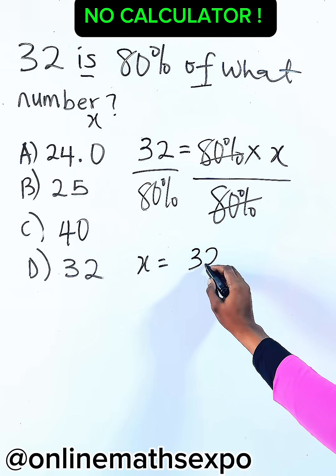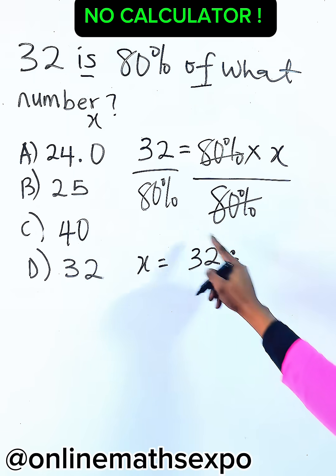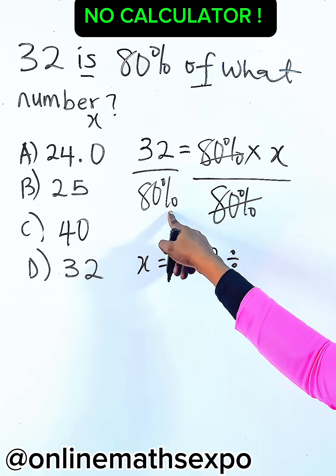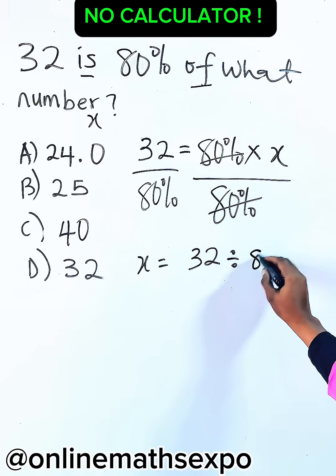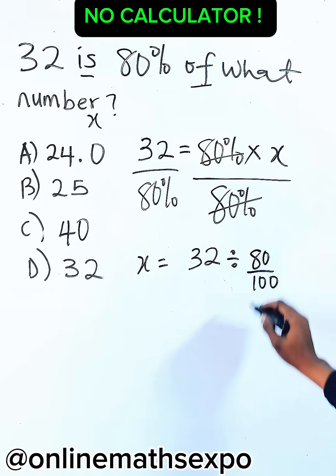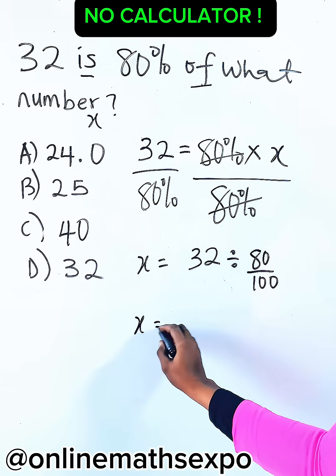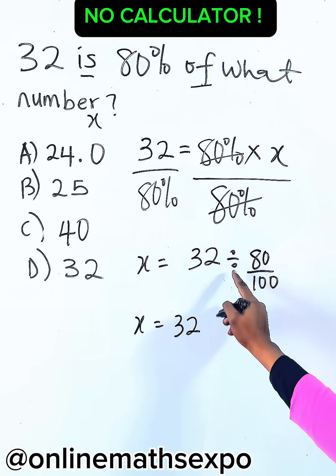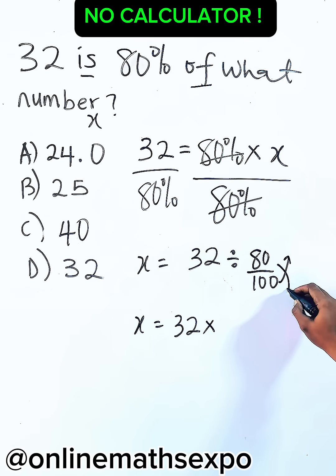This is the same as 32 divided by 80 percent, which is a fraction of 100. So it is 80 divided by 100. To do this, we have 32, division sign turns to multiplication, you flip this through, so we're going to have 100 over 80.